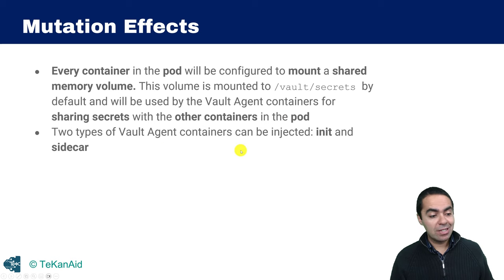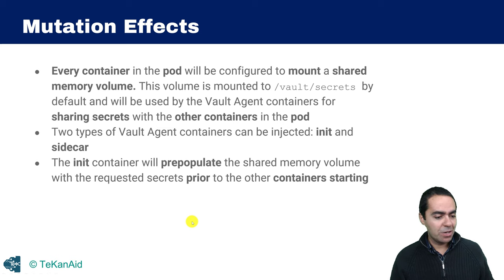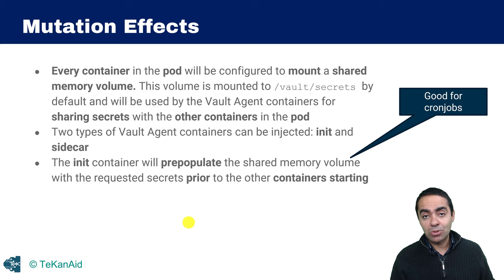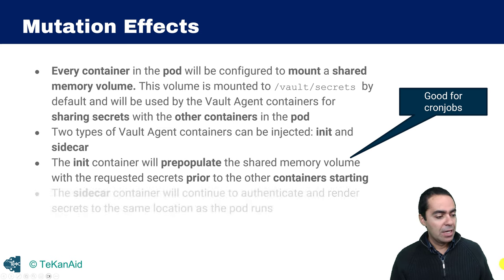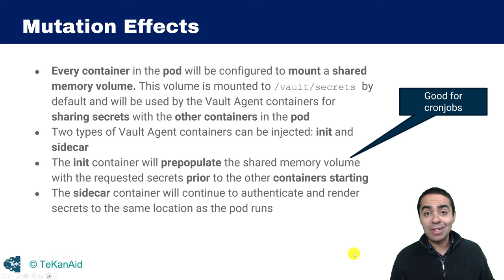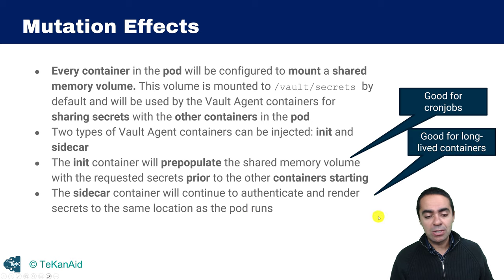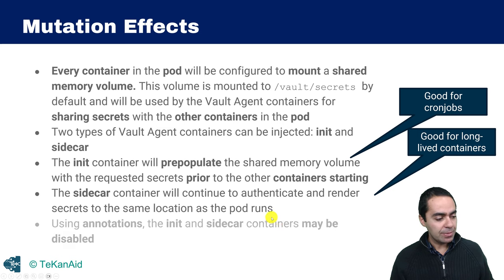There are two types of Vault agent containers we can inject: the init container and the sidecar container. The init container pre-populates the shared memory volume with the requested secrets prior to the containers starting — very useful for cron jobs like backup jobs. The sidecar container continues to authenticate and render secrets to the same location as the pod runs, making it ideal for long-lived containers. If you use dynamic secrets, as the secrets change over time the sidecar container can render those secrets dynamically. Init and sidecar containers can also be disabled using annotations.